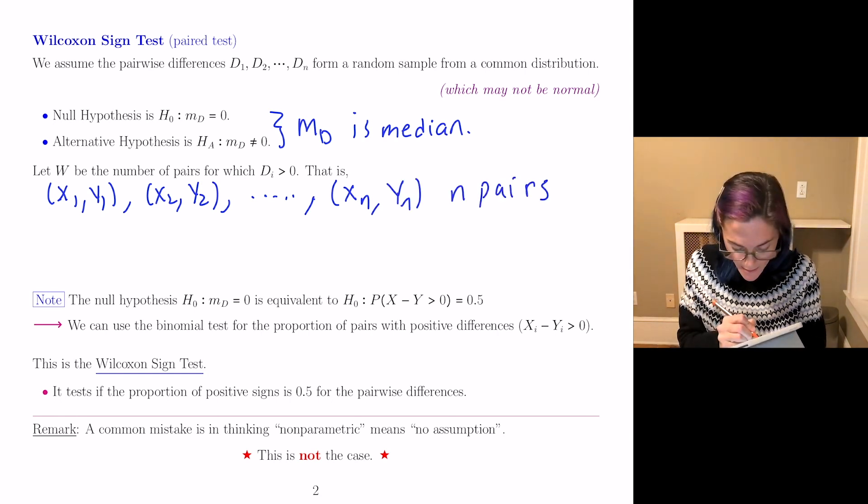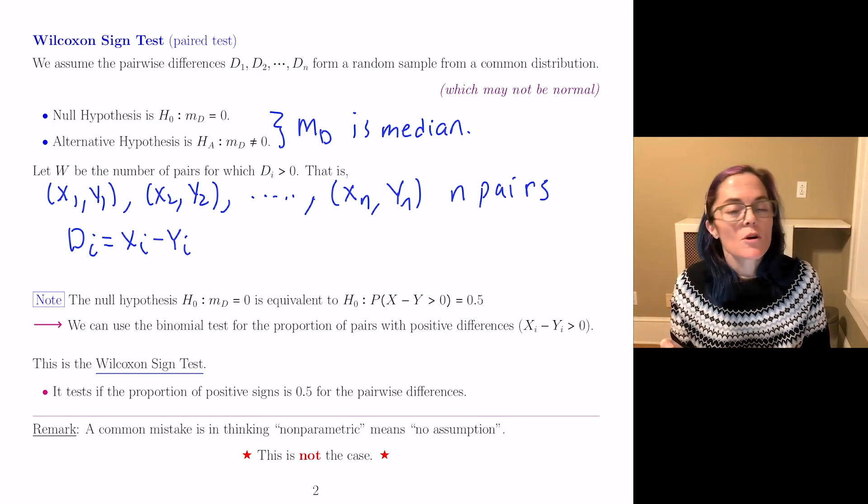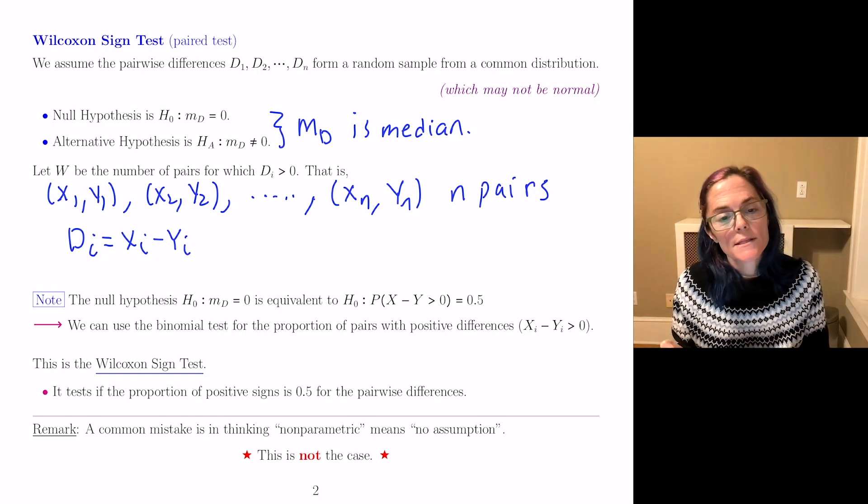And Di, we take Xi minus Yi. So this is either positive, negative, or zero.